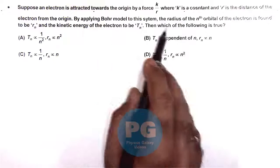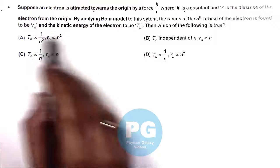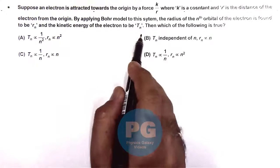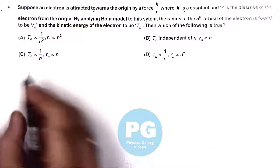By applying Bohr model to this system, the radius of the nth orbital of the electron is found to be rn and its kinetic energy is Tn. We need to check how Tn and rn depend on the quantum number n.